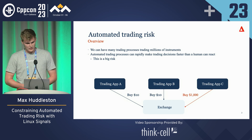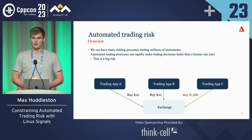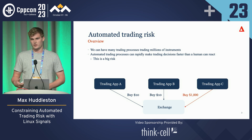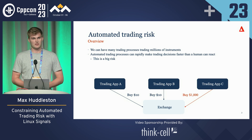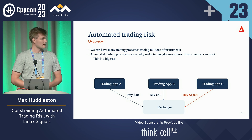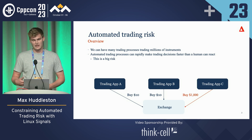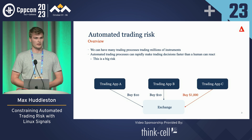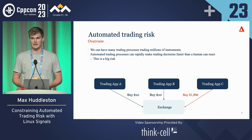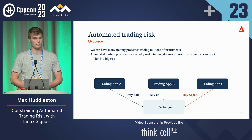Automated trading risk at a firm like Optiver — we can be trading millions of different instruments with thousands of different trading processes at the same time. These automated trading processes are making very rapid trading decisions, so much so that we could never possibly double check these orders as they go out, so we have to build systems that limit this risk. If there is an issue, like a software bug or getting pricing wrong, this could be unrecoverable loss for a firm like Optiver even in a couple of minutes, and it could also have a very negative effect on the external market.